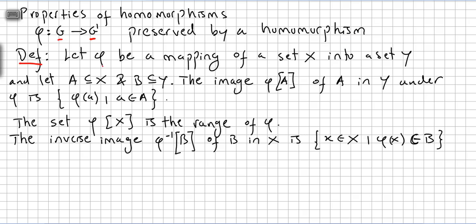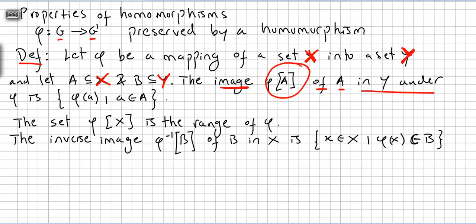Let Phi be a mapping of a set X into a set Y. Let A be a subset of X and B be a subset of Y. The image of A in Y under Phi is the set {Phi(a) such that a is in A}. We are calling this Phi of A the image of A in Y under the mapping Phi.